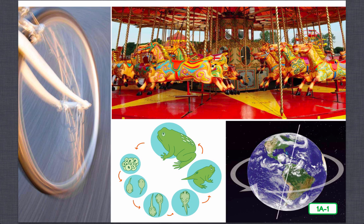Just like you can pick any part of the circle to be the starting point, we choose one part of each natural cycle to be our starting point. This makes it easier to talk about all of the parts of the cycle. The most important thing to remember is that cycles always come back to the chosen starting point before starting over again.